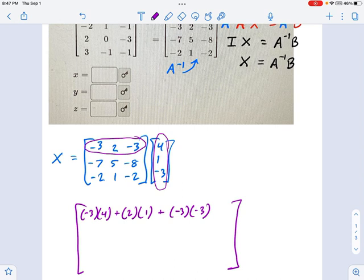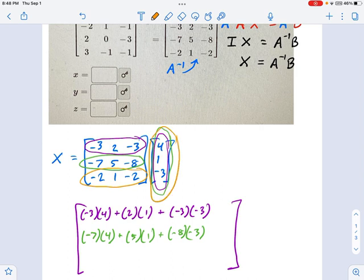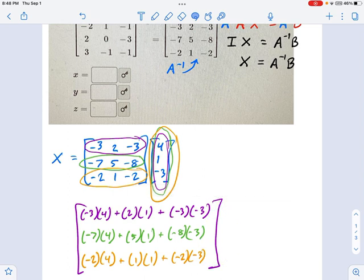So it's negative 3 times 4 plus 2 times 1 plus negative 3 times negative 3. Negative 3 times 4 is negative 12. 2 times 1 is 2, and this guy over here is 9. So negative 12 plus 2 plus 9. You can do the math on that one. That's going to be negative 1.